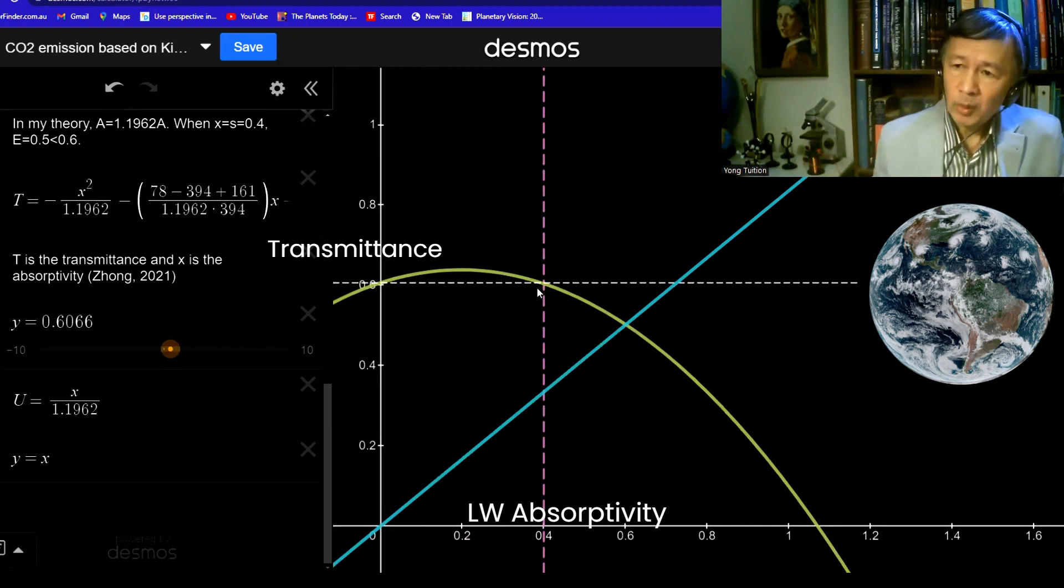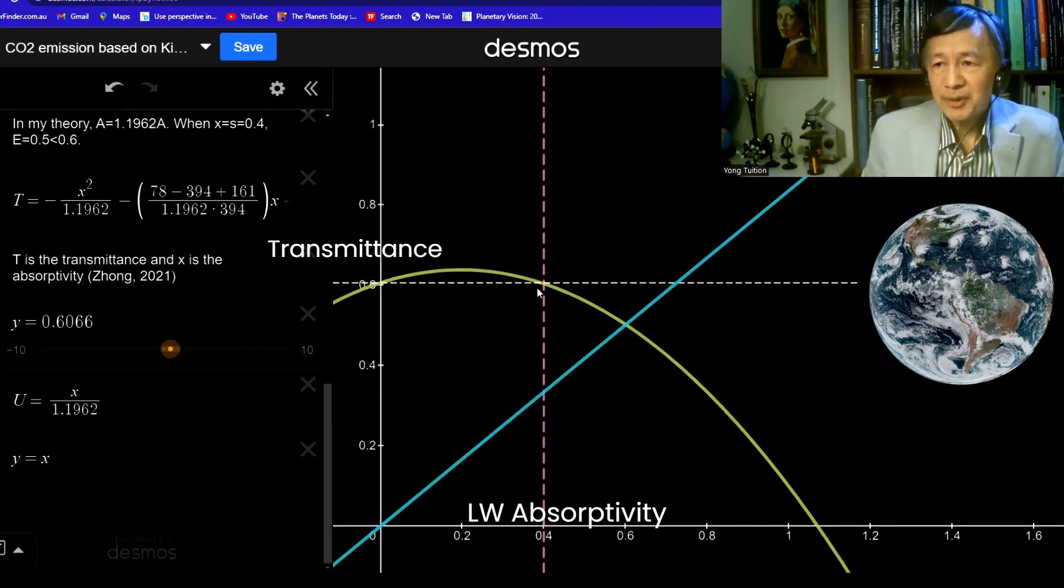That is why the Earth as a whole can achieve its 60% transmittance in the presence of the longwave absorption by the greenhouse gases, again, by the infrared radiation absorbers.